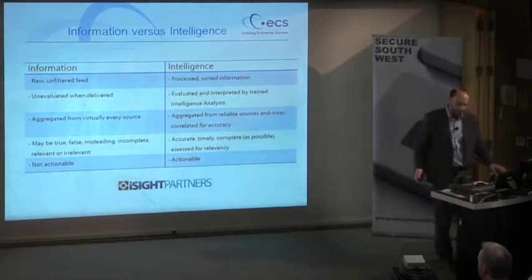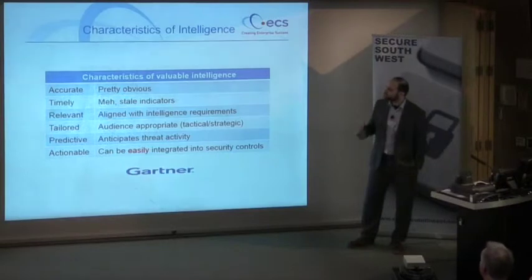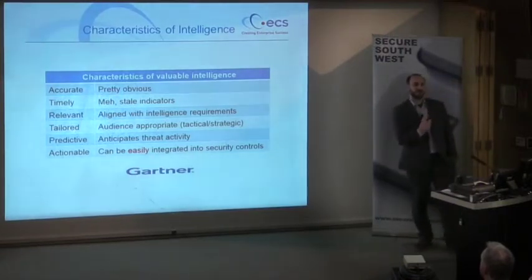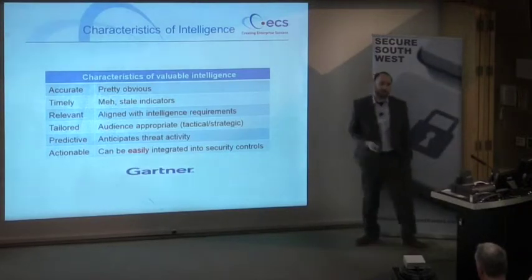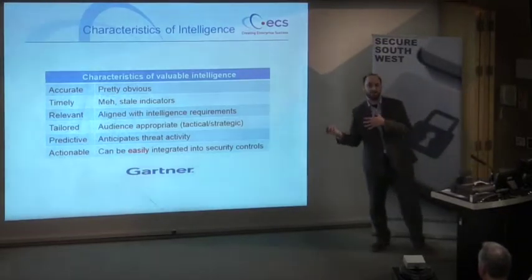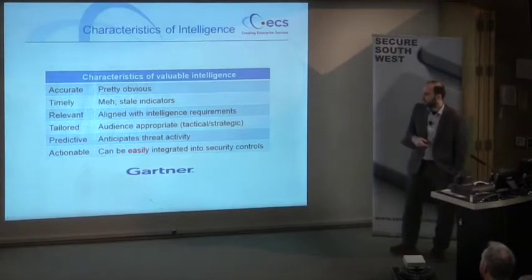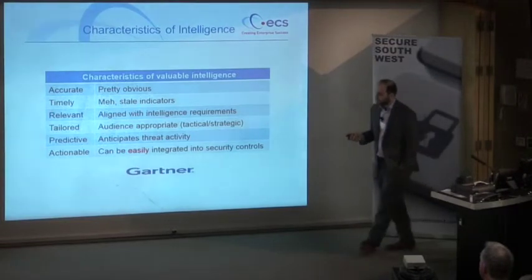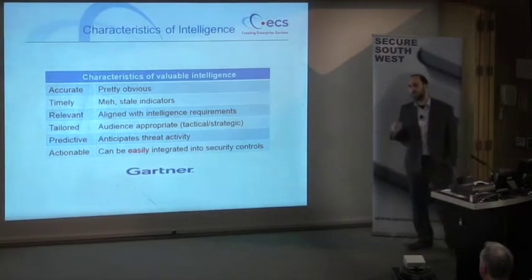Some key characteristics of intelligence: it must be accurate, and it must be timely — there's no value in receiving information about an APT group three months after you were hacked. It must be relevant — for example, the financial sector may have different threat actors targeting it compared to the energy sector. It must be tailored, and predictive where possible. Of course it must be actionable, meaning easily integrated with our security controls and processes.